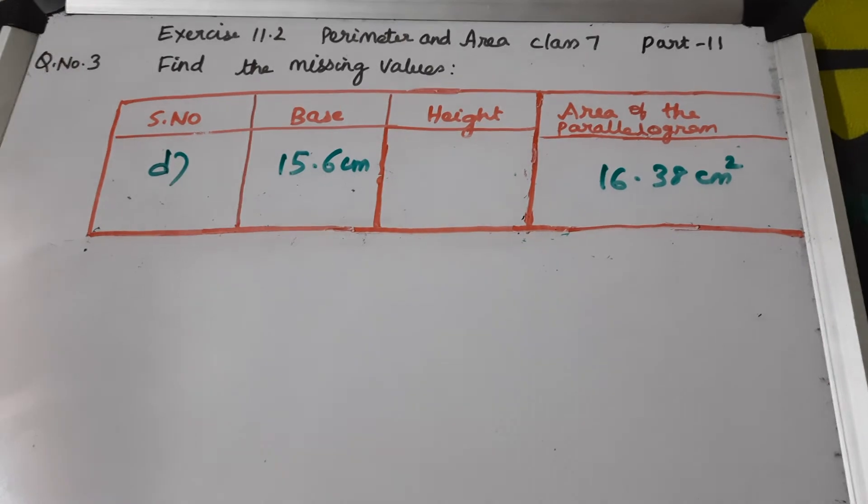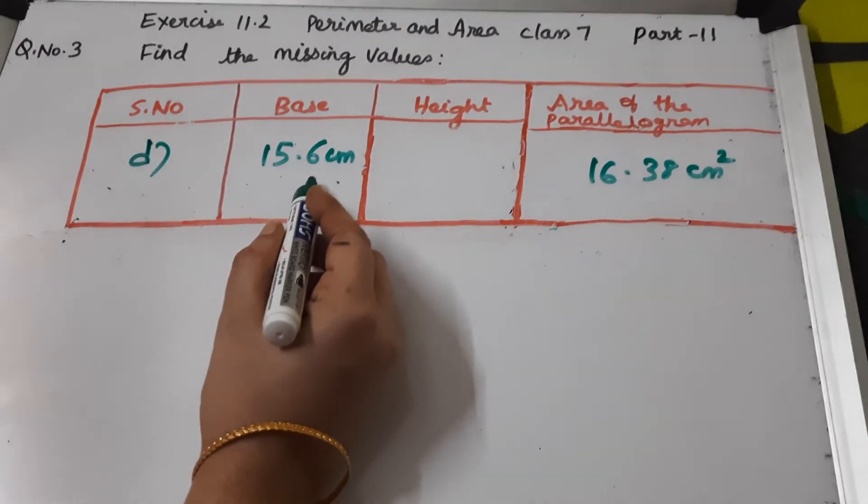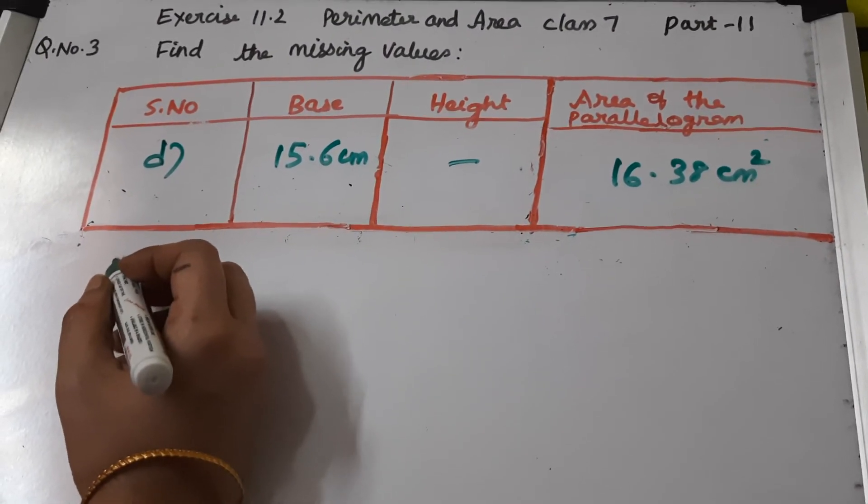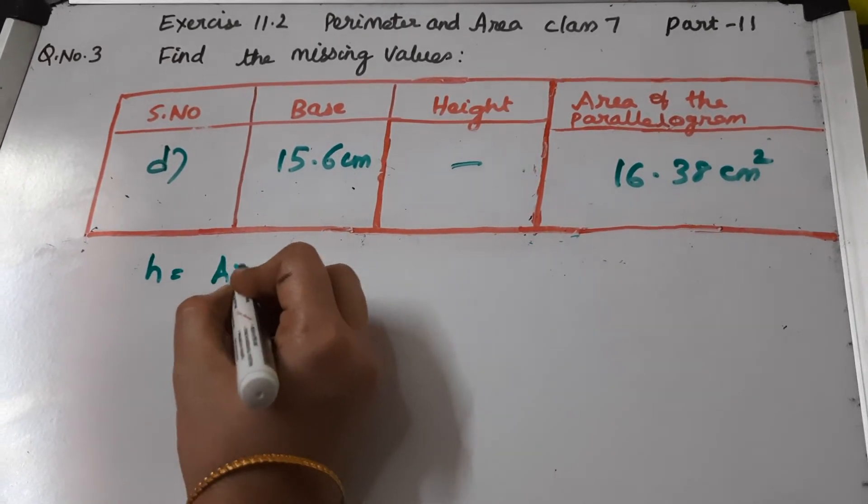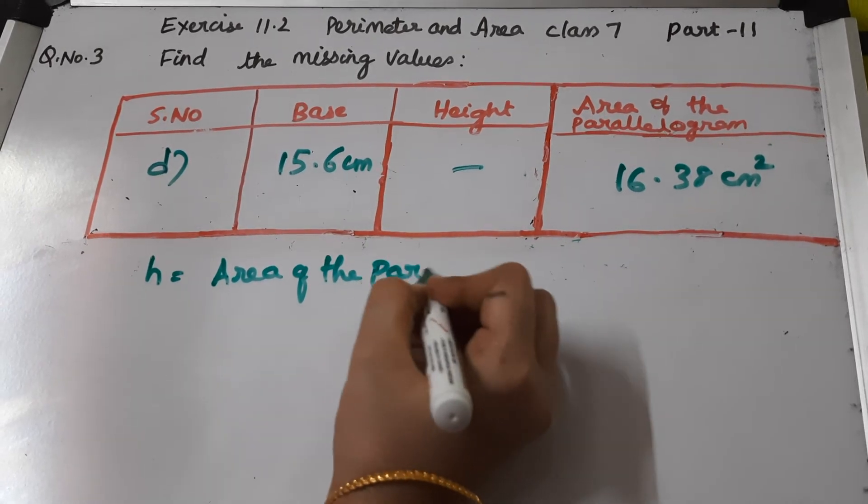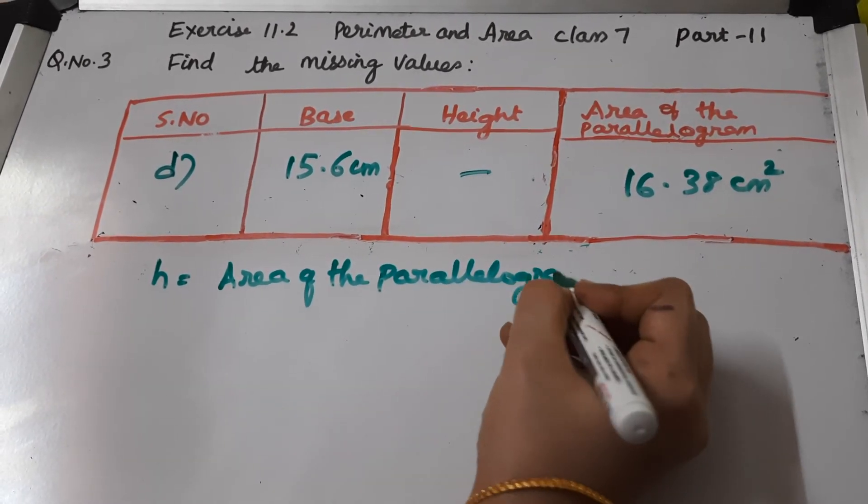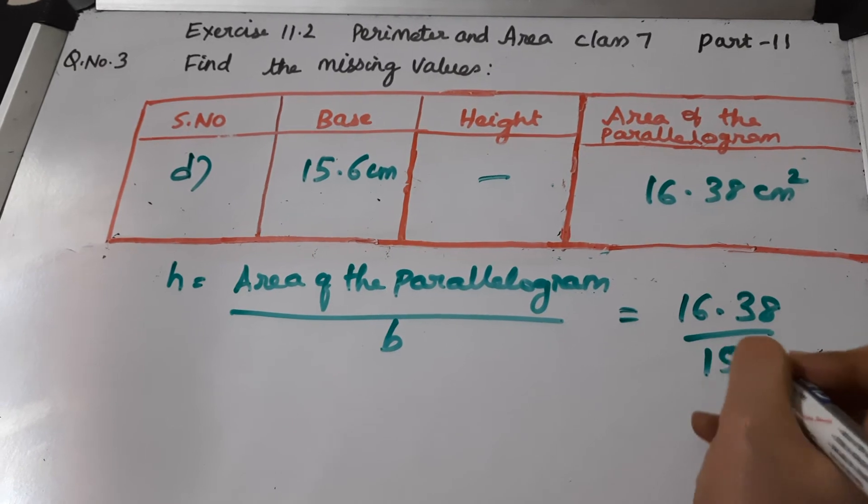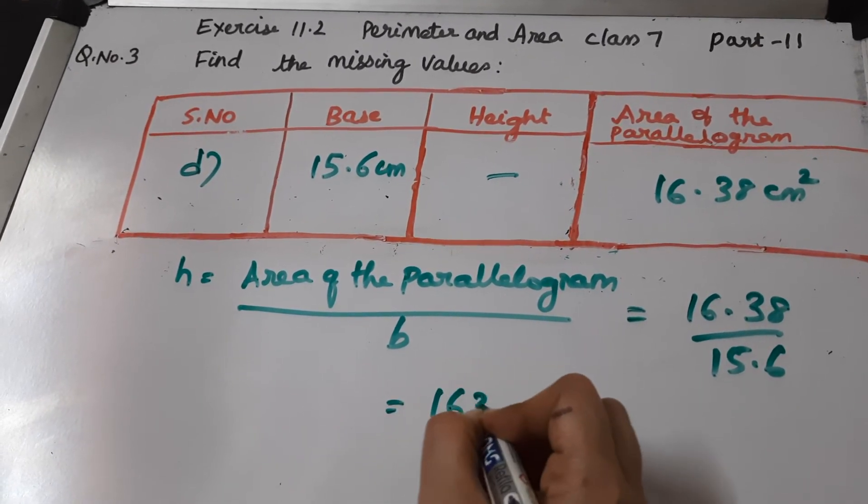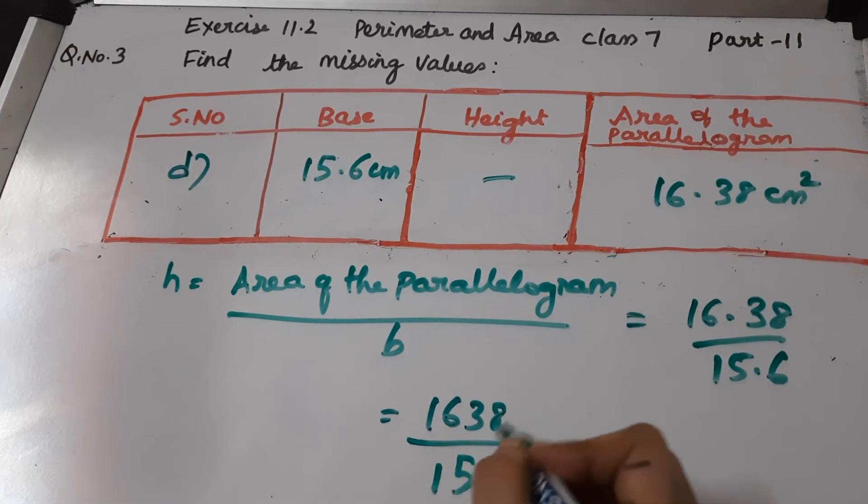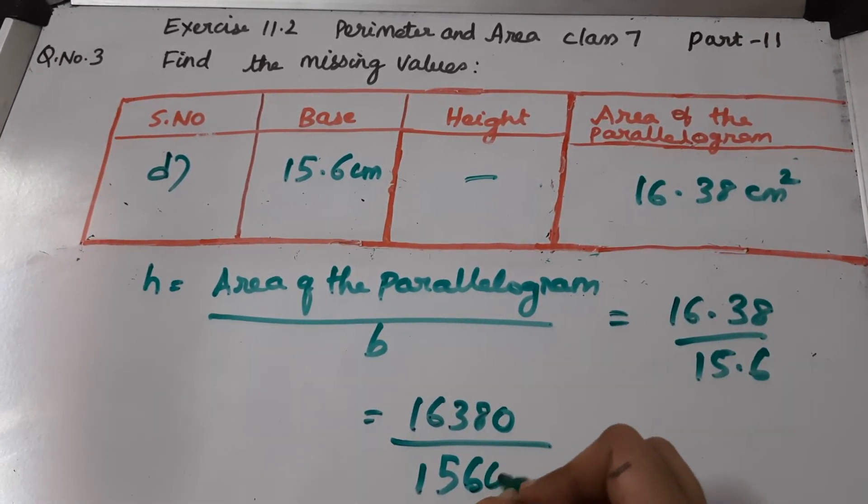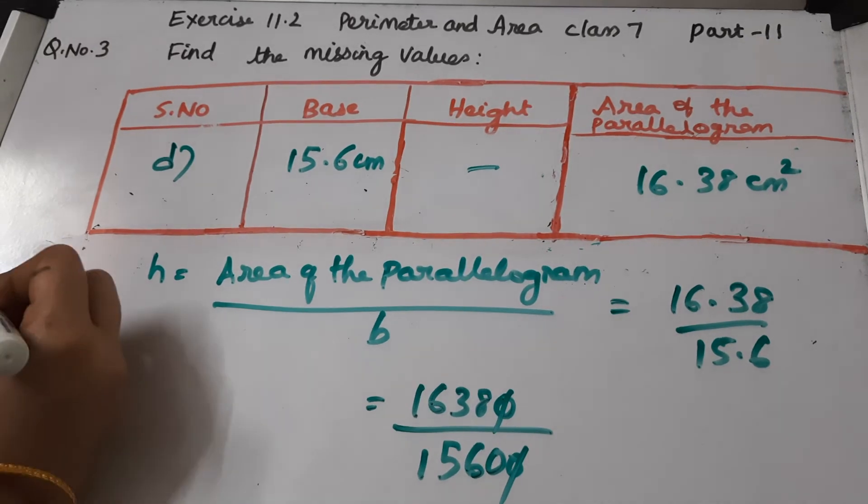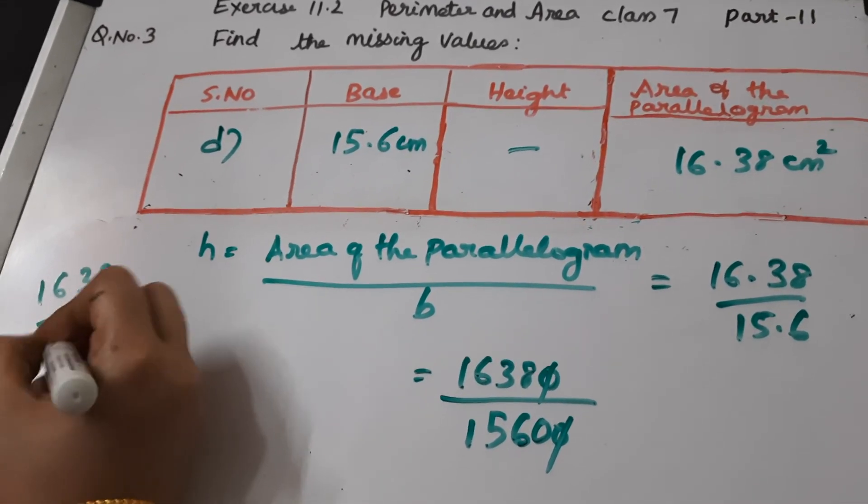Now we will do the d bit. Base is given as 15.6 centimeters. Height is not given. 16.38 centimeters square is the area of the parallelogram. Now we have to find the height. Height equals area of the parallelogram by base. That is 16.38 by 15.6. First let us remove the decimal points. Here there is only one decimal point, to remove add 1 zero. Two decimal points, add 2 zeros to the denominator. Cancel this zero. So we have to simplify 1638 by 1560.